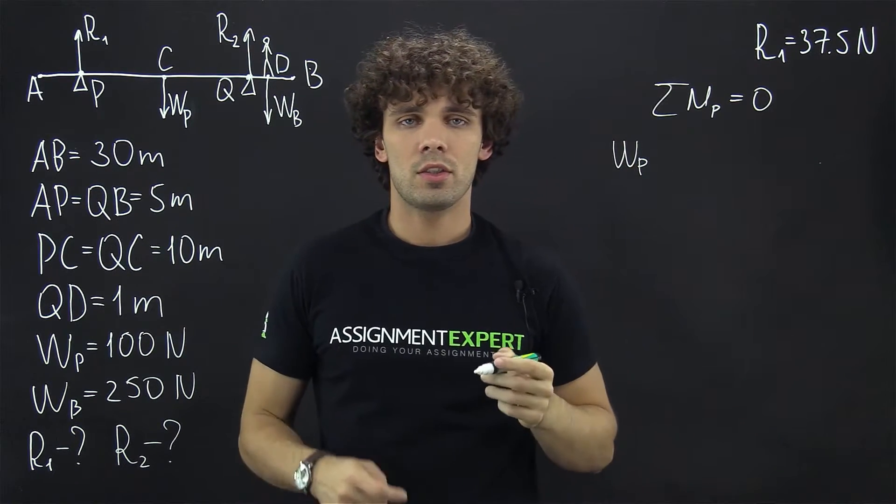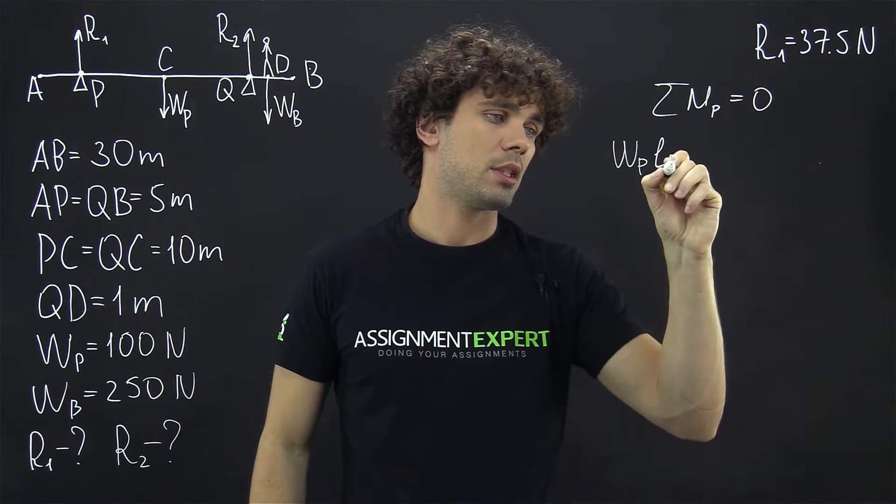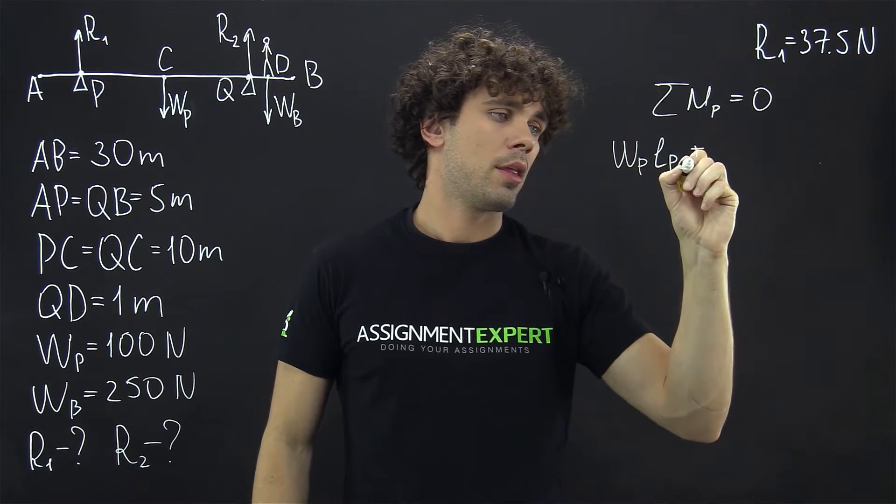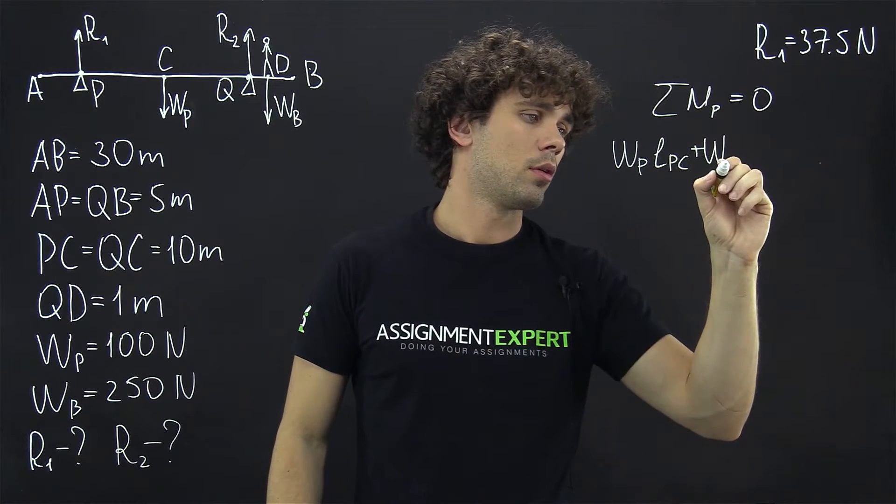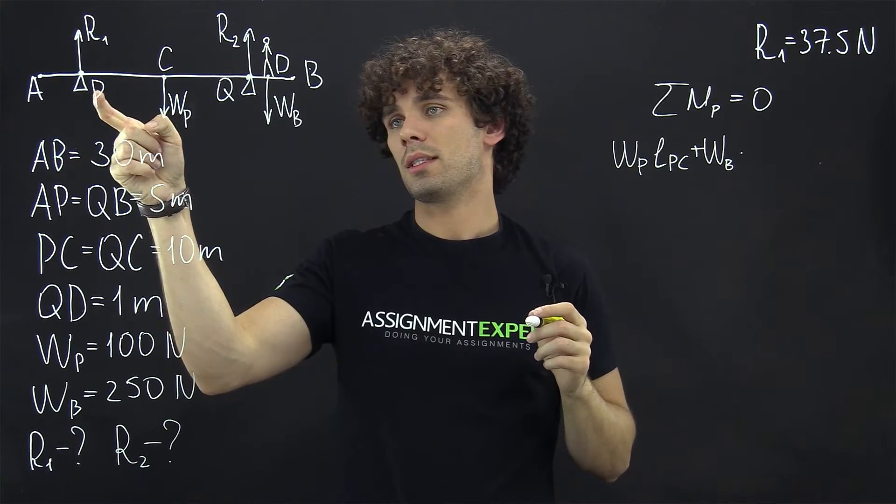So we multiply it by LPC. Then we have the weight of the buoy, and the distance to point P is LPD.